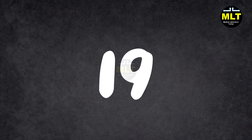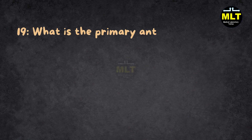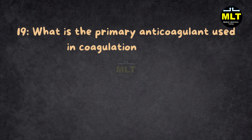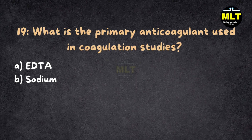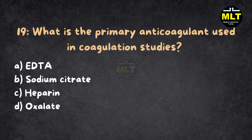MCQ 19. What is the primary anticoagulant used in coagulation studies? A. EDTA. B. Sodium citrate. C. Heparin. D. Oxalate.